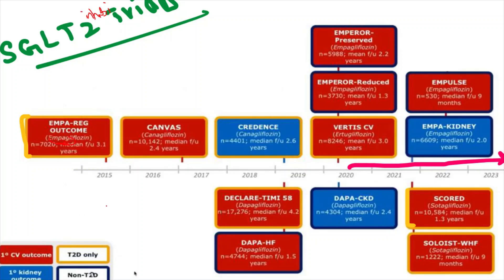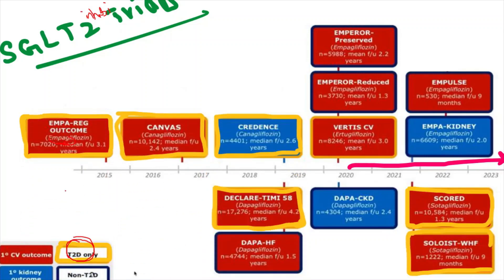First, we will see the trials done in type 2 diabetes patients. The important trials are highlighted in the yellow bracket: the EMPA-REG OUTCOME trial in 2015, the CANVAS trial with canagliflozin, the CREDENCE trial, and the DECLARE-TIMI trial. These are all important trials where only type 2 diabetes patients were included.